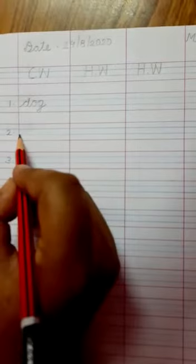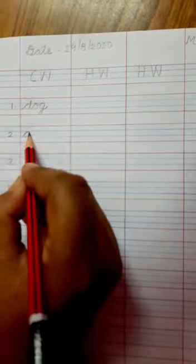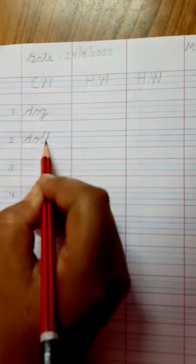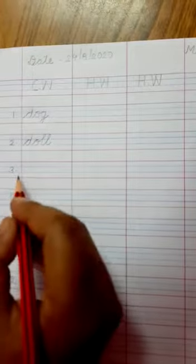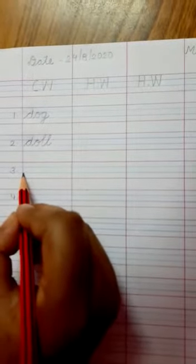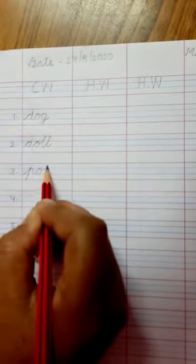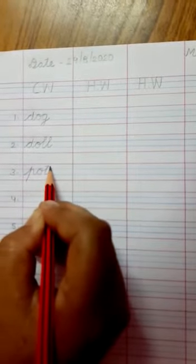Then the next word is doll and the spelling is D-O-L-L, doll. Then pot and the spelling is P-O-T. Pot, P and T.